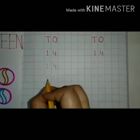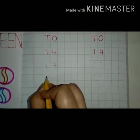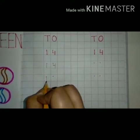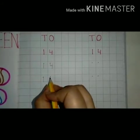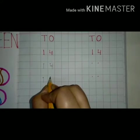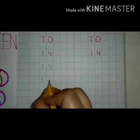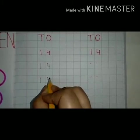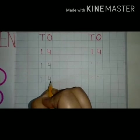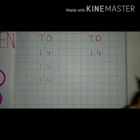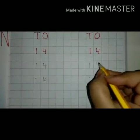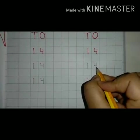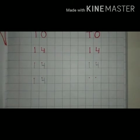Once again, for the number 14. Then we will start at the top. Standing line. Standing line to the middle. Slipping line. Standing line from top to bottom. 1, 4, 14.